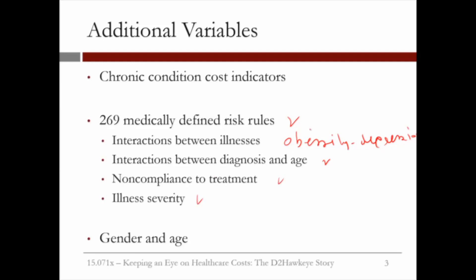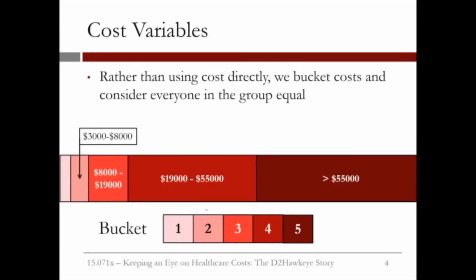The last set of variables involved demographic information like gender and age. An important aspect of the variables were those related to cost. Rather than using costs directly, we bucketed costs and considered everyone in a group equally, defining five buckets.